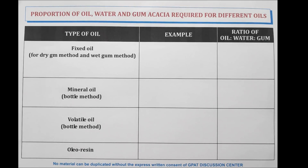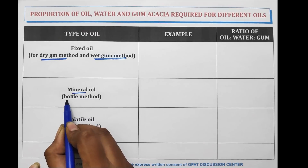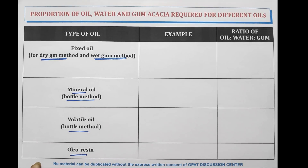There are 4 types of oils which are required for preparation of emulsion: fixed oil, mineral oil, volatile oil, and oleurizing type. Fixed oil is used to prepare emulsion by dry gum method and wet gum method. Mineral oil is used to prepare emulsion by bottle method. Volatile oil is also used to prepare emulsion by bottle method, and oleurizing is used to prepare emulsion simply.